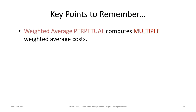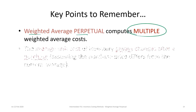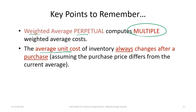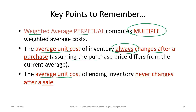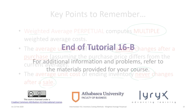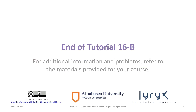For key points to remember: the weighted average perpetual approach computes multiple weighted average costs. As a result, the average unit cost of inventory will always change after a purchase — presuming the purchase price differs from the current average. If the purchase price doesn't change, the average doesn't change. The average unit cost will never change after a sale. This concludes Tutorial 16B and all discussion related to the weighted average approach. You can now proceed to Tutorial 16C, which focuses on the periodic and perpetual FIFO approaches.